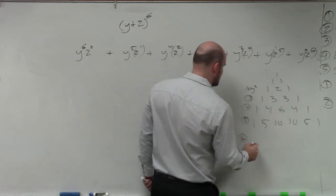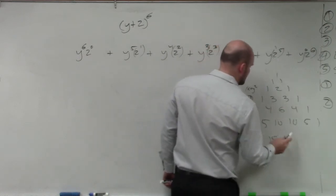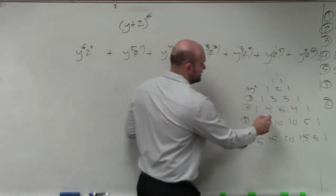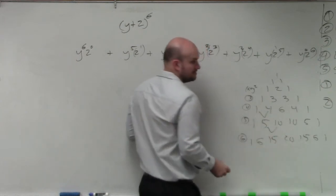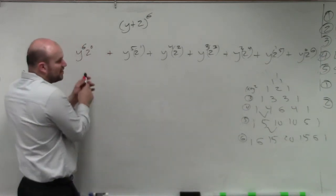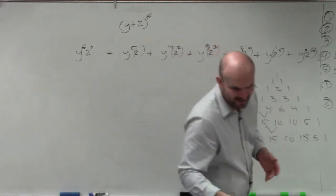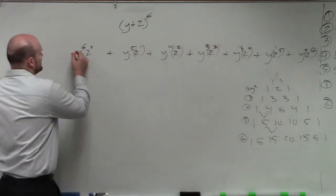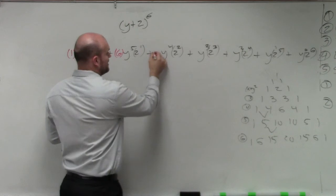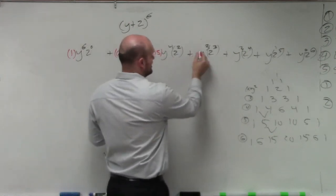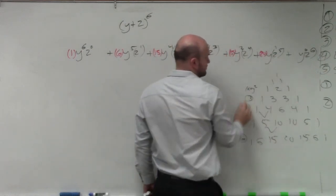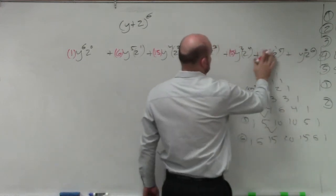And to the 6th power is going to be 1, 6, 15, 20, 15, 6, 1. Again, all I'm doing is I'm adding terms to give me that next row. So that means I need to multiply each one of these expressions by that coefficient. So I multiply this first one by 1. The second one I need to multiply by 6. This one I need to multiply by 15. Here I need to multiply by 20. Here I need to multiply by 15, 20, 6, thank you.